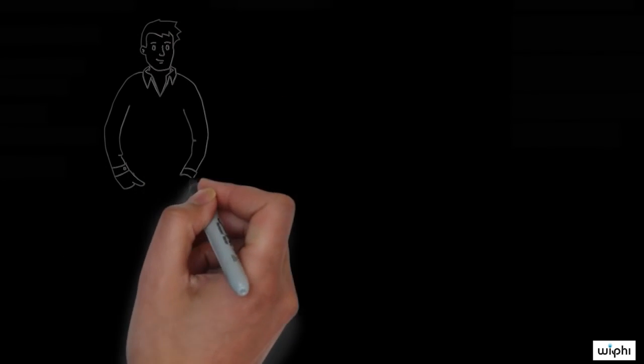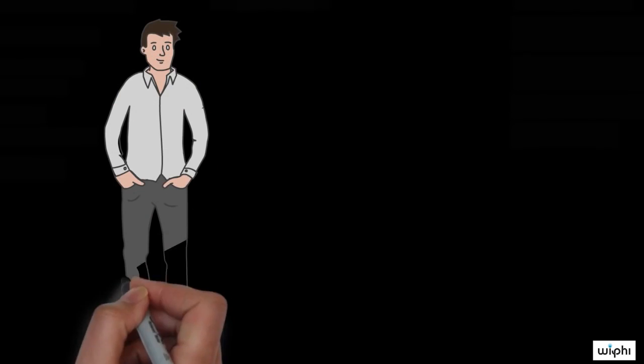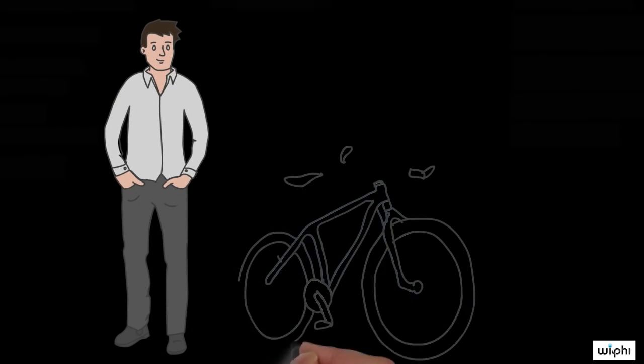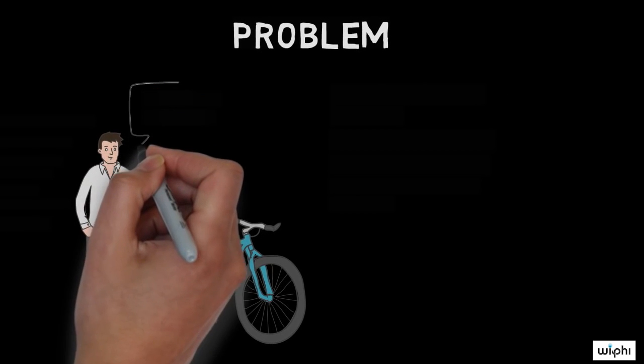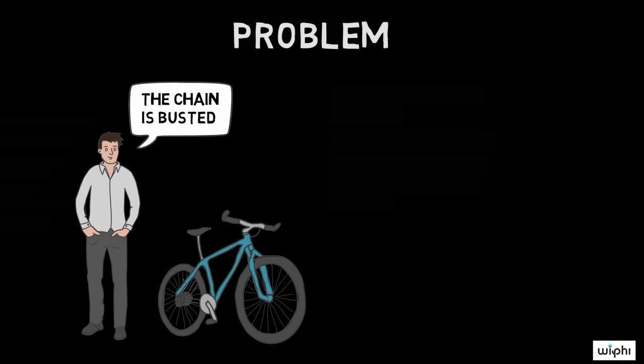Let's start with a problem. Suppose that one day I decide to work from home, and my roommate Alex asks to use my bike, and of course I let him. So he takes my bike and goes to work. Later that day, he returns home with my bike, only the chain is busted.